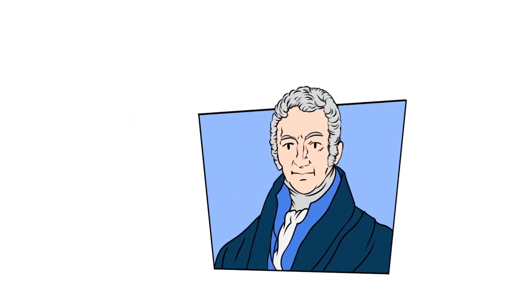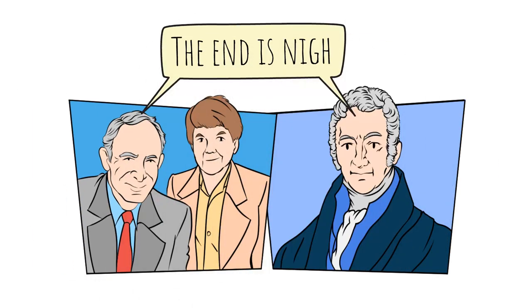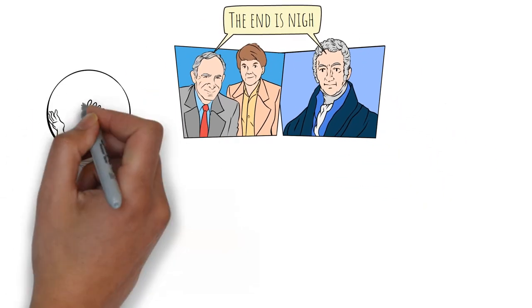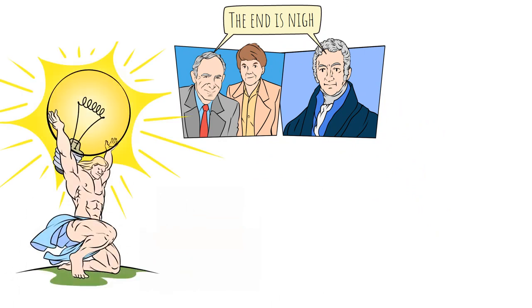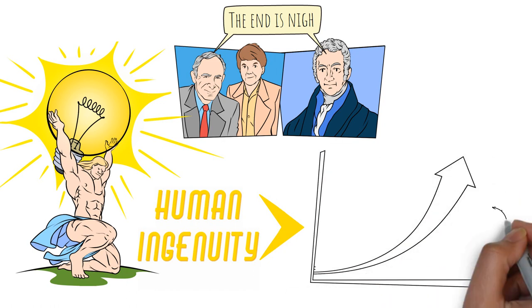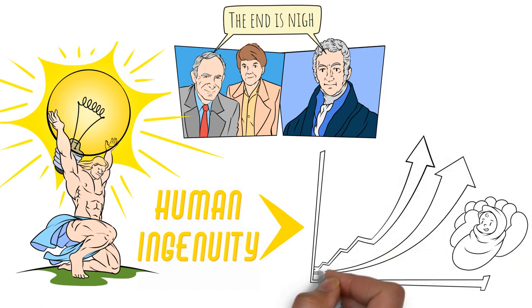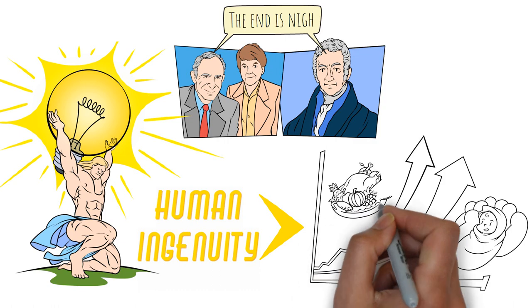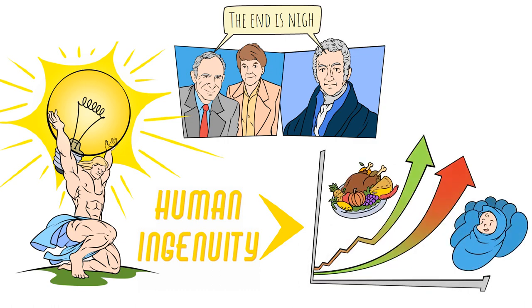What both Malthus and the Ehrlichs failed to foresee was the degree to which human ingenuity would lead to innovations that would meet growing human needs. The result is that even though the population is larger than ever, the world's food production per capita has never been higher than in modern times.